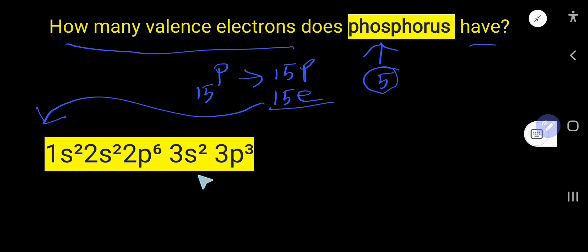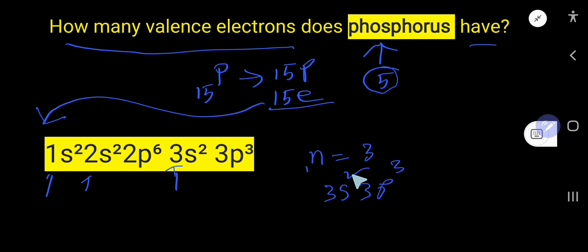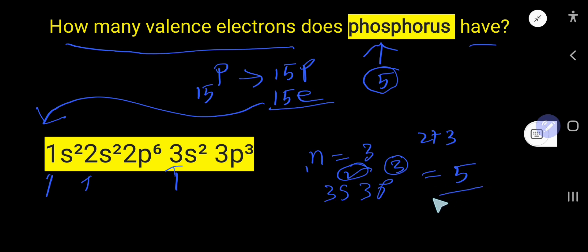The valence shell means the outermost shell. You can easily identify the outermost shell by considering the highest value of the principal quantum number. Here we have n=1, n=2, and n=3, so the highest principal quantum number is 3. For n=3, we get 3s² and 3p³. Adding 2 and 3 gives five electrons — these five electrons are the valence electrons.